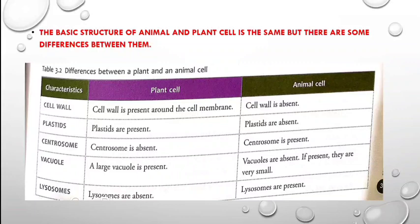Vacuole. A large vacuole is present in the plant cell — as shown in the picture, the center portion is covered with a large vacuole. Whereas in an animal cell, vacuoles are absent, and even if they are present, they are very, very small in size.